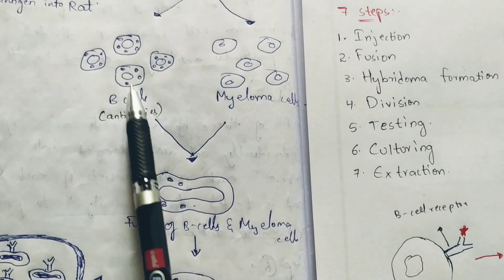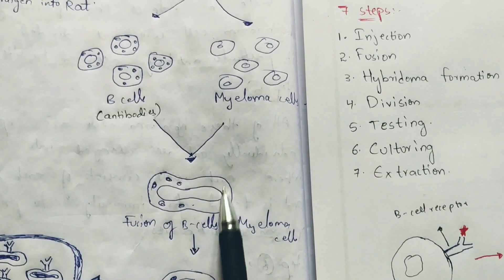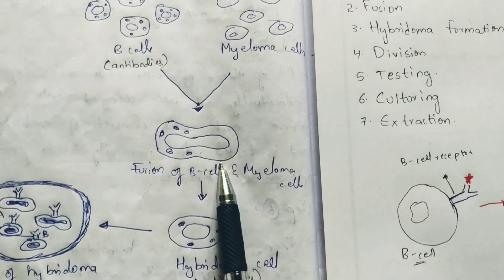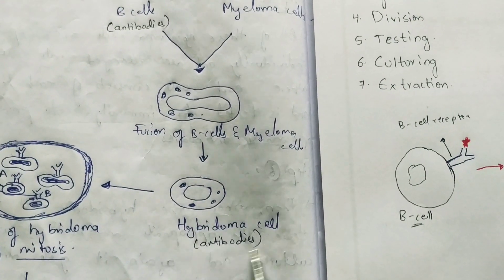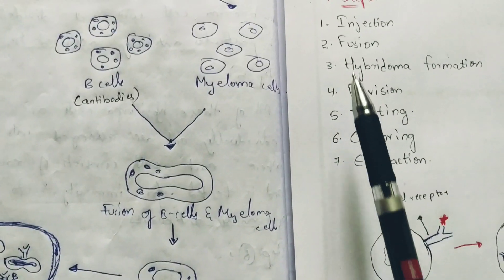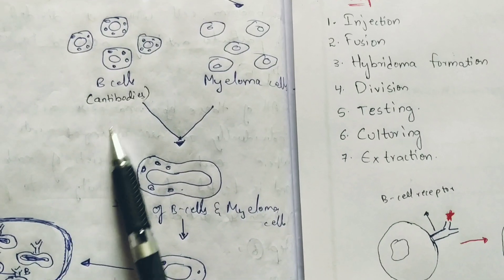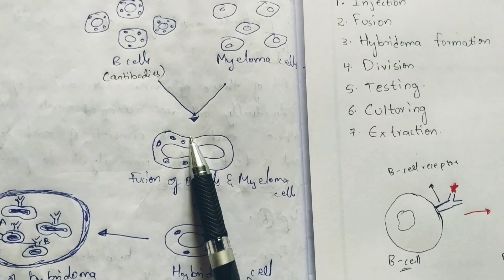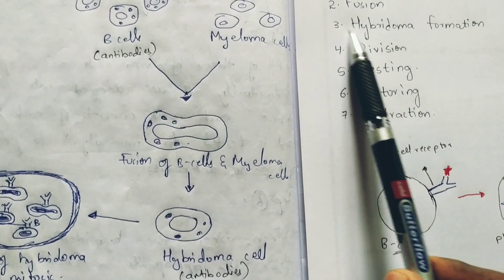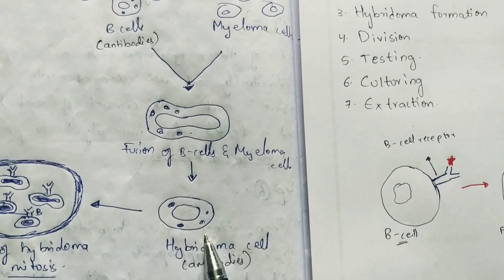So this is the fusion — the second step. The B cell part and the myeloma cell part will get fused. Due to the fusion, there is a formation of hybridoma cell. Coming to the third step: hybridoma formation takes place.